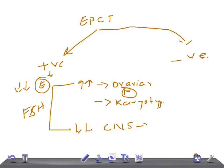Now let's see what if EPCT is negative. EPCT negative means there is no withdrawal bleeding. Absence of withdrawal bleeding is diagnostic of either outflow obstruction or endometrial scarring - that's Asherman's syndrome.